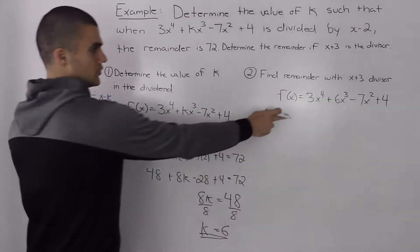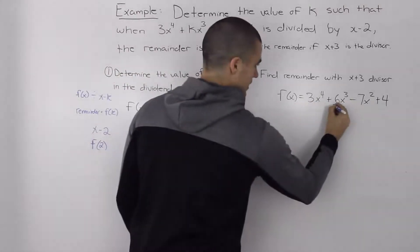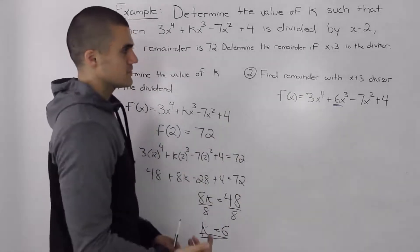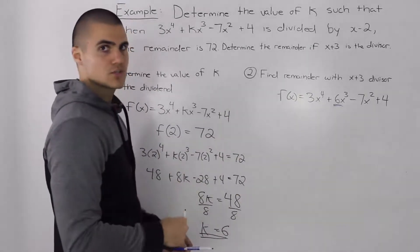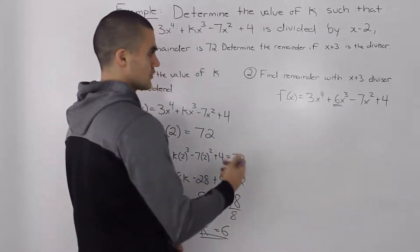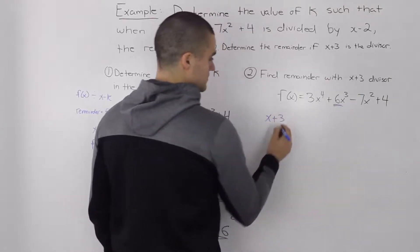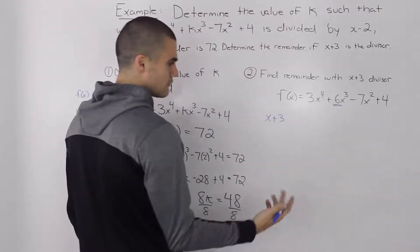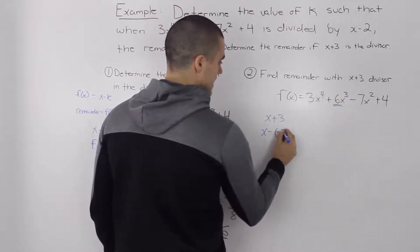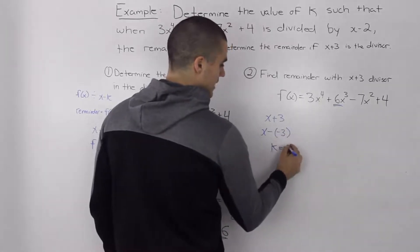So now we can use our new dividend with this k value that we found of 6 in part 1 to find the remainder when x plus 3 is the divisor. And again, we can just use the remainder theorem, we don't have to do the long division, the remainder theorem is a lot quicker to use. So if you remember, the divisor has to be in an x minus k form, so this x plus 3 divisor we can rewrite as x minus negative 3. So then our k value is this negative 3 here.